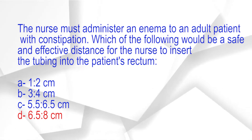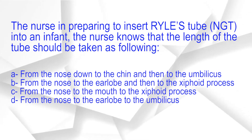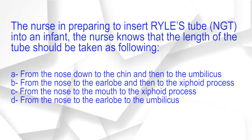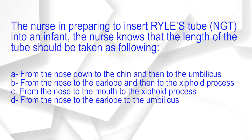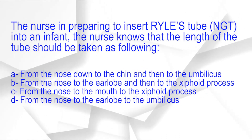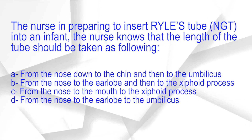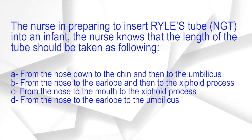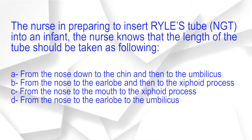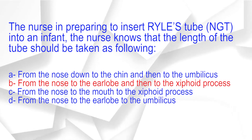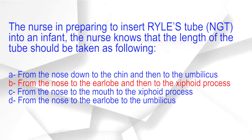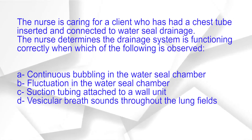The nurse is preparing to insert a nasogastric tube (NGT) into an infant. The nurse knows that the length of the tube should be measured as: A. From the nose down to the chin and then to the umbilicus. B. From the nose to the earlobe and then to the xiphoid process. C. From the nose to the mouth to the xiphoid process. D. From the nose to the earlobe to the umbilicus. The correct answer is option B: From the nose to the earlobe and then to the xiphoid process.